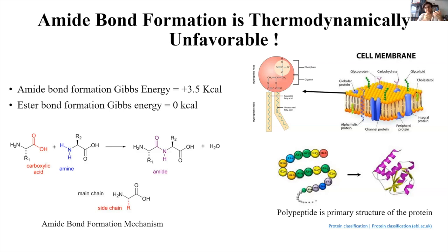How can ester bonds help? We can see esters in our biochemistry — for example in glycerol in cell membranes. They are also very abundant in prebiotic chemistry and can form polyesters, which are very similar to polypeptides as polymers. Under the same aqueous conditions, the Gibbs energy of ester bond formation is lower compared to amide bond formation, so polymerization can occur more easily. This may help us solve the amide bond formation problem.